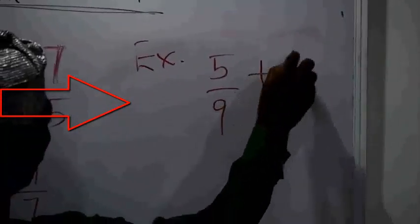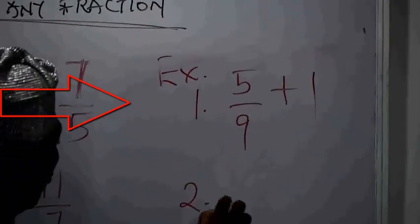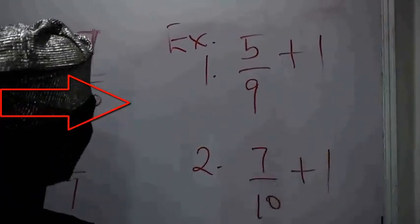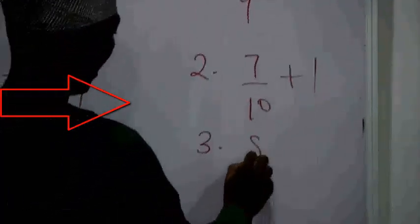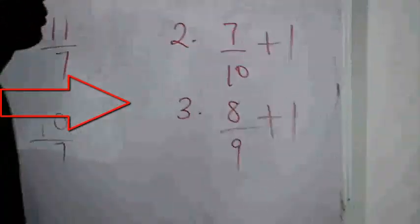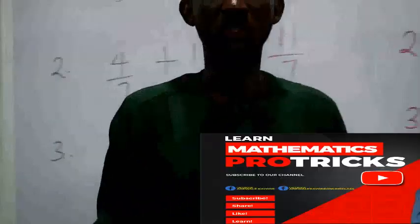I am going to leave you with this exercise. Solve these and put your answers in the comment box. Number 1: 5 over 9 plus 1. Number 2: 7 over 10 plus 1. Number 3: 8 over 9 plus 1.